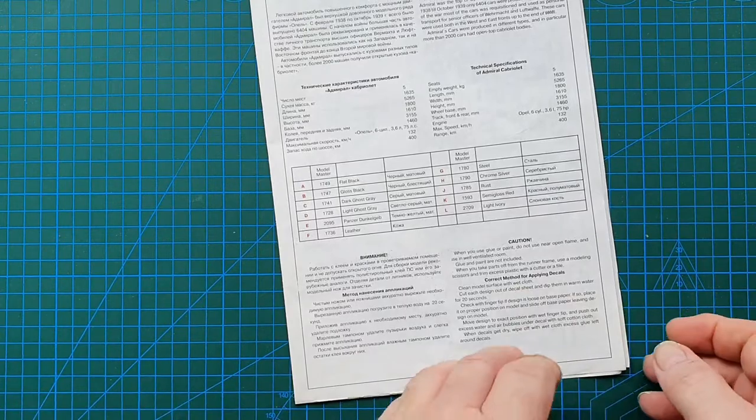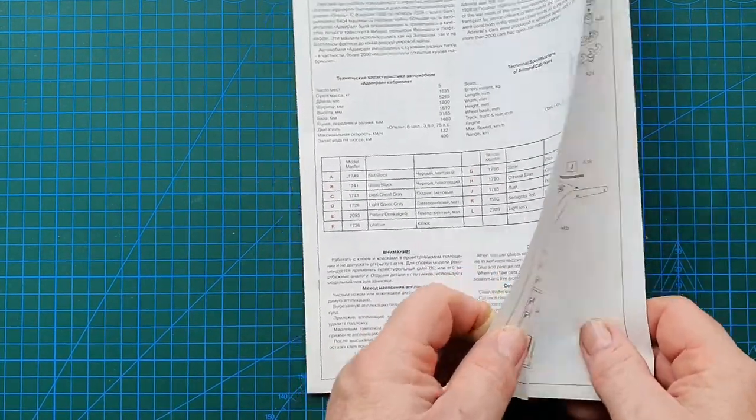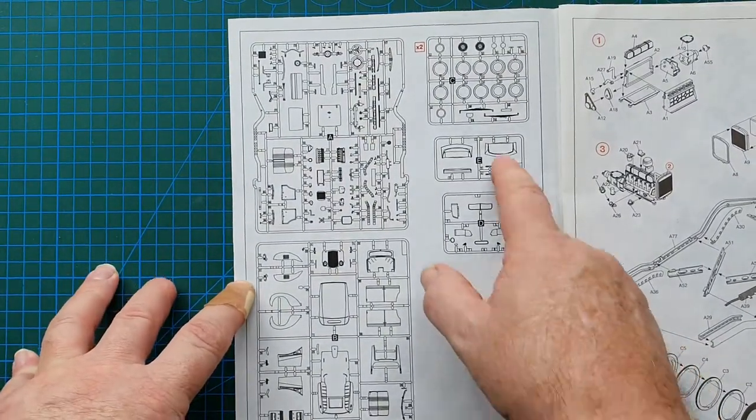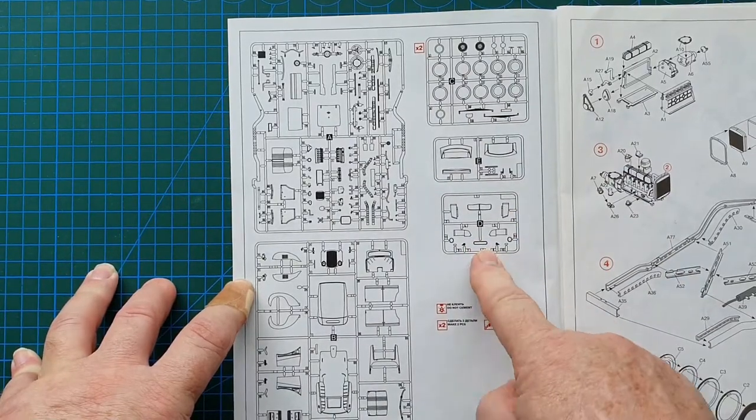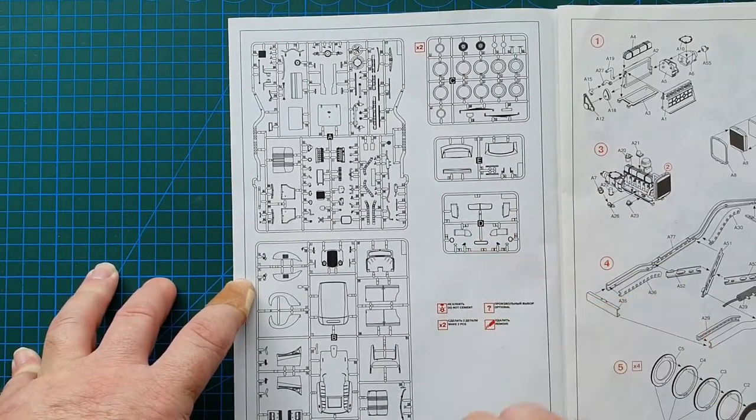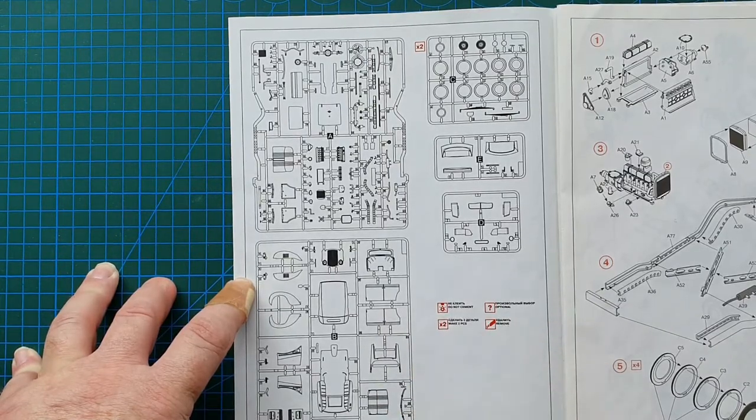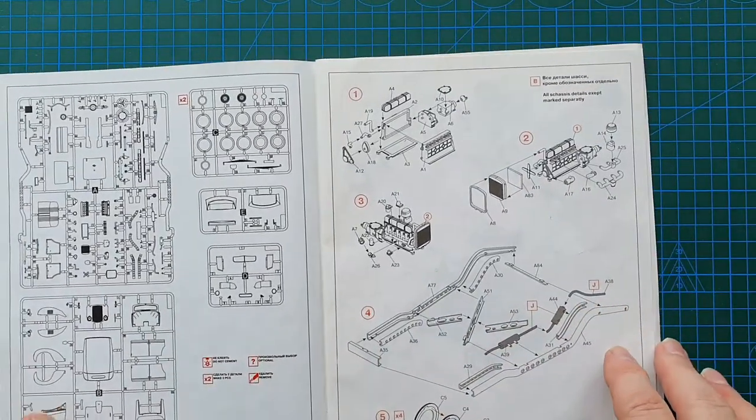Usual cautions, how to apply the decals. And then let's have a look. So one, two, three, four, five sprues, including the clears. Basic instructions about making two of this and etc. But fairly straightforward.